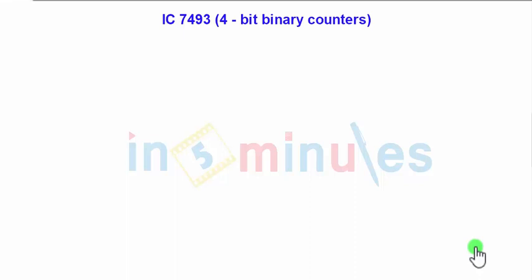Hello guys, welcome back to Within 5 Minutes. In this presentation, we are going to see the IC integrated circuit 7493, which is a 4-bit binary counter. Since this is a 4-bit binary counter, it is going to count 16 combinations, starting from 0 to 15.